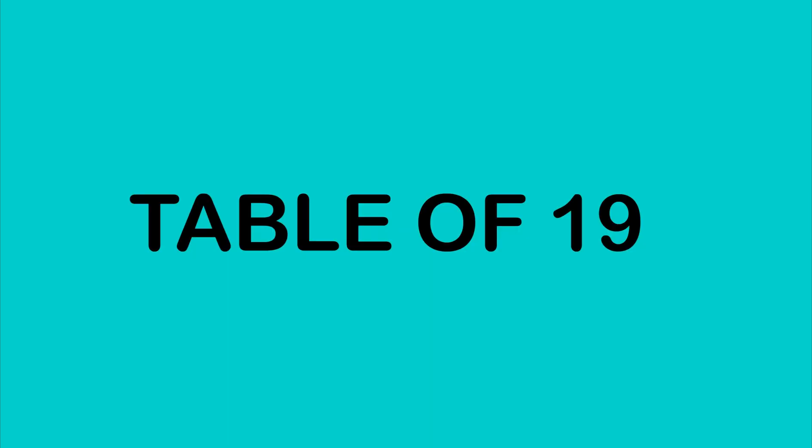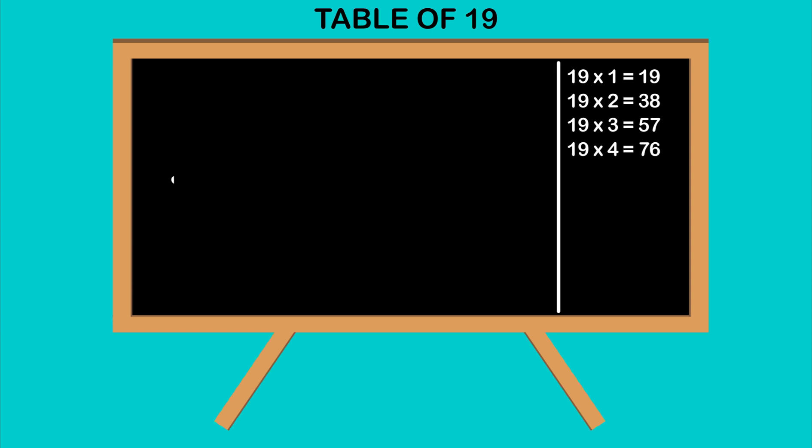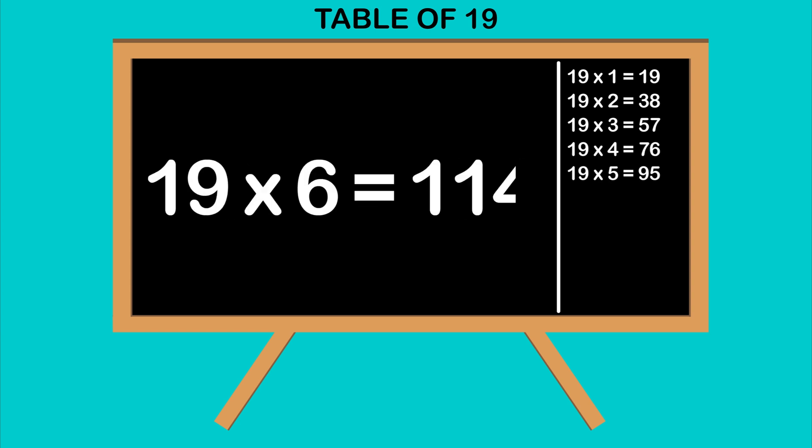Table of 19: 19 ones are 19, 19 twos are 38, 19 threes are 57, 19 fours are 76, 19 fives are 95, 19 sixes are 114.